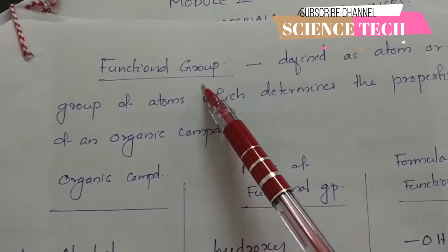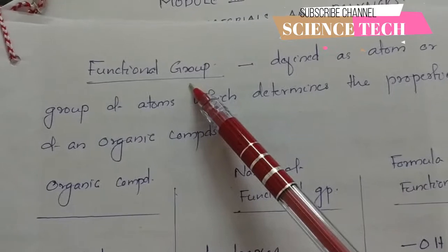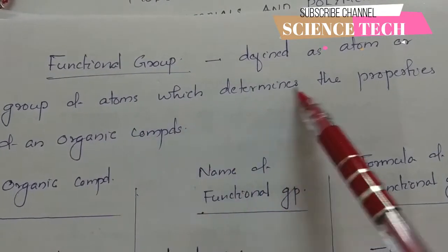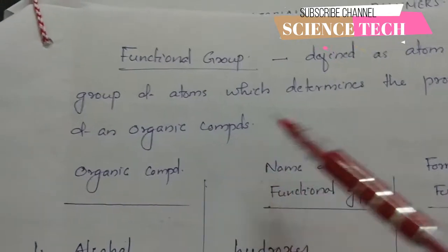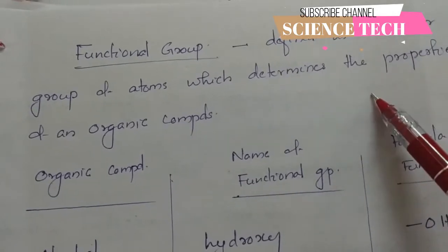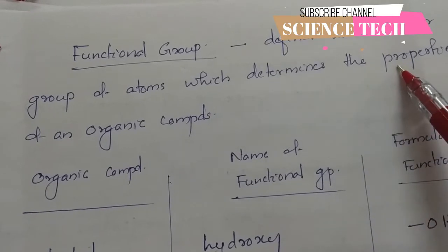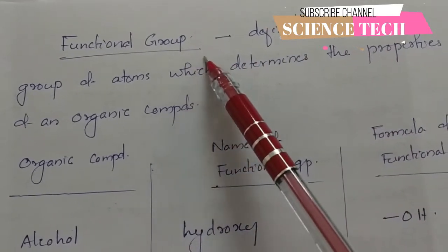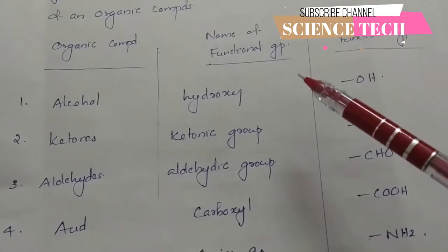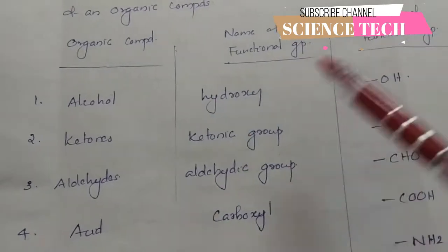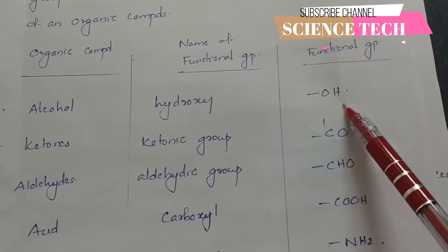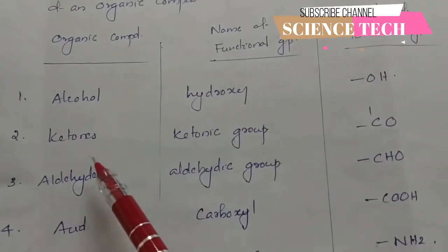What is a functional group? A functional group is defined as an atom or group of atoms that determines the property of an organic compound. The functional group of alcohol is the OH group, which is called the hydroxy group.